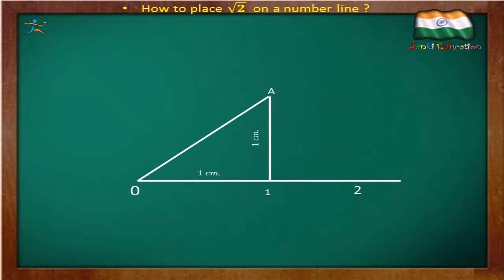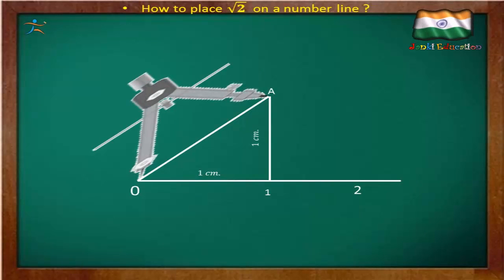With the help of a geometrical compass and with the measurement of radius OA, mark an arc that intersects the number line. This intersection point on the number line is √2.